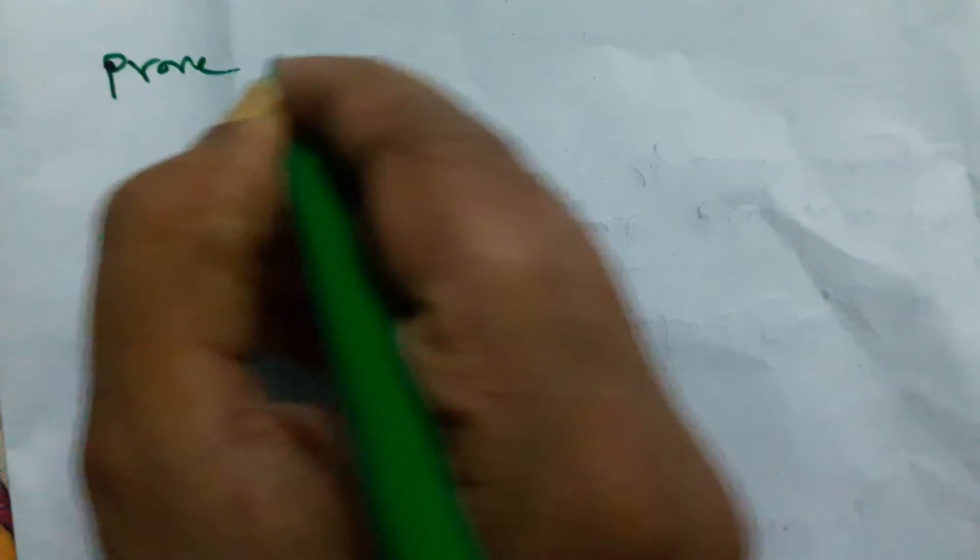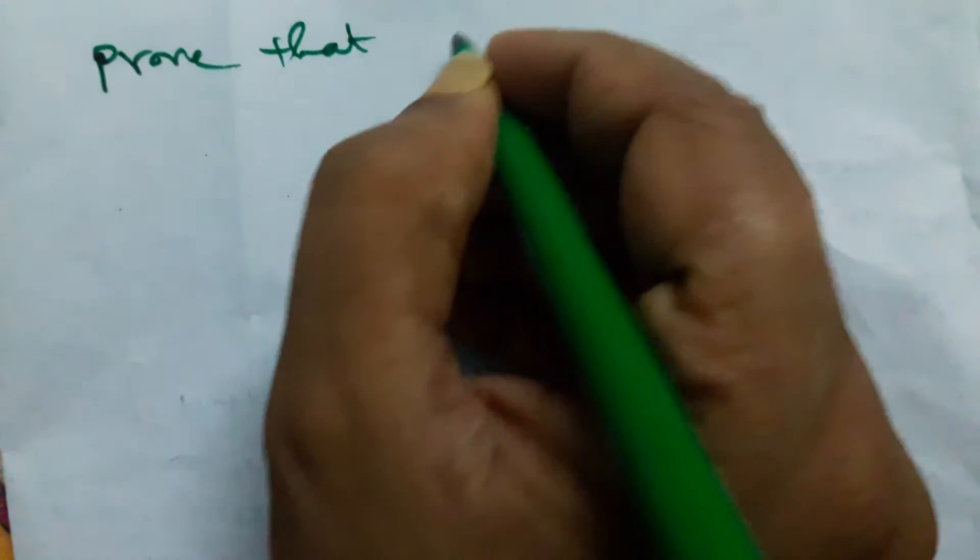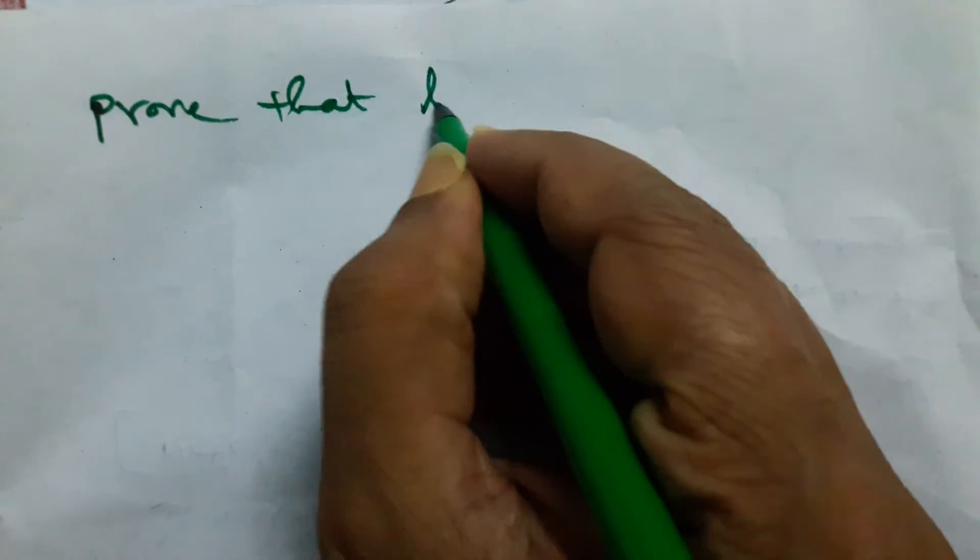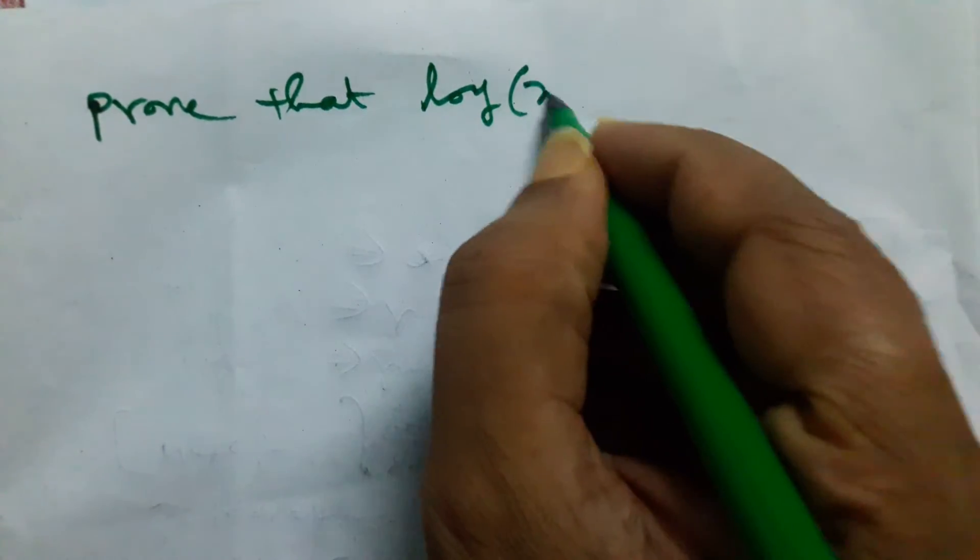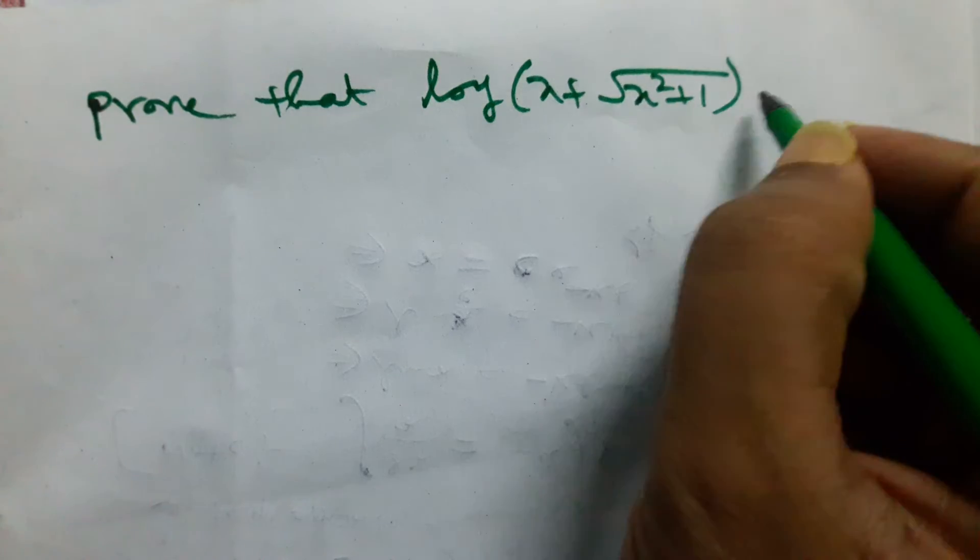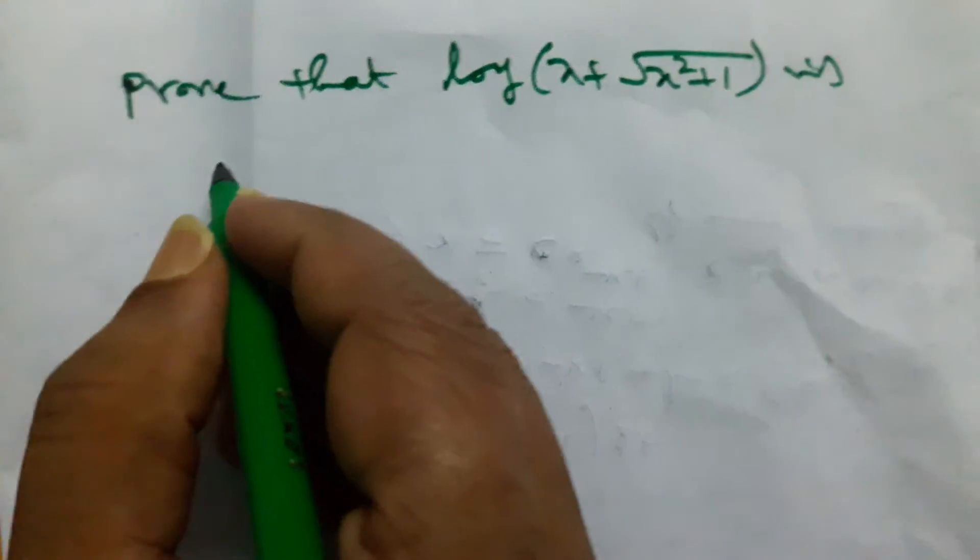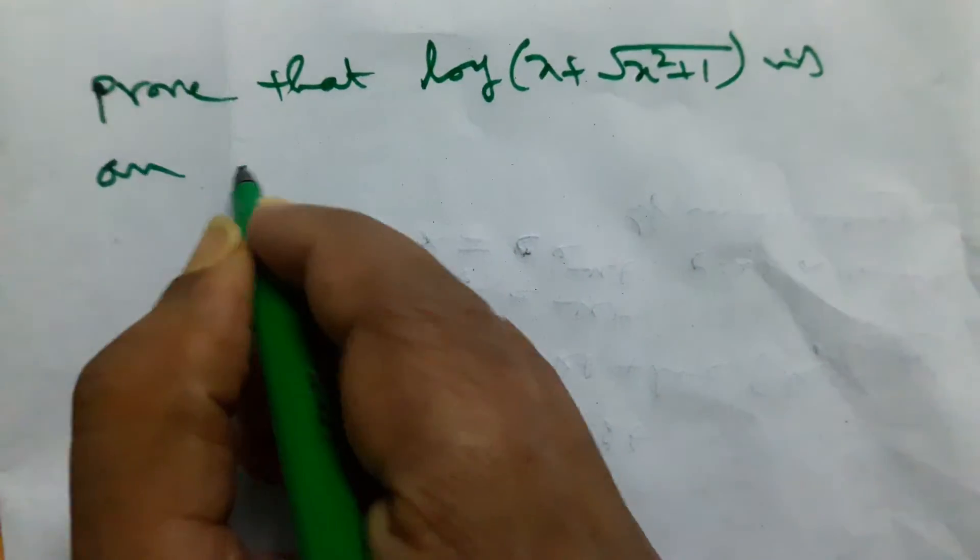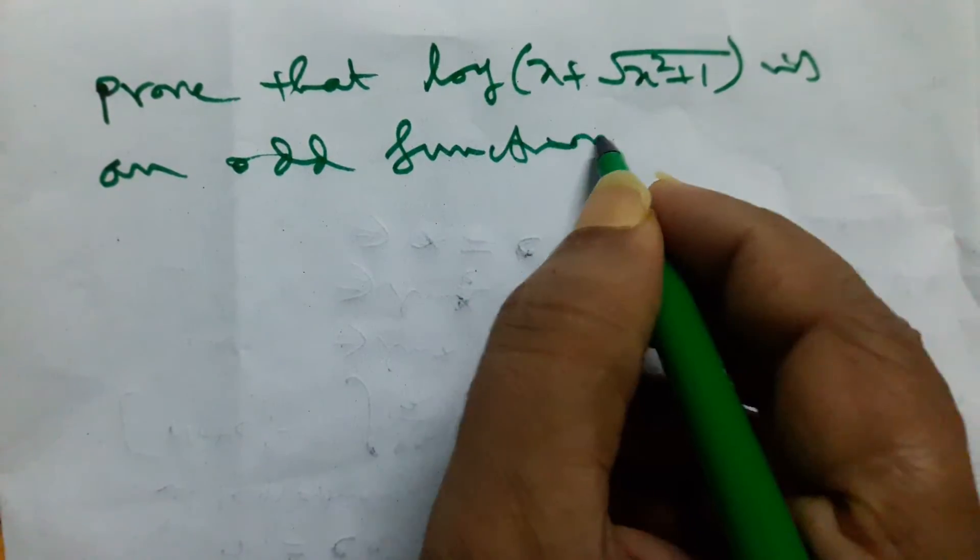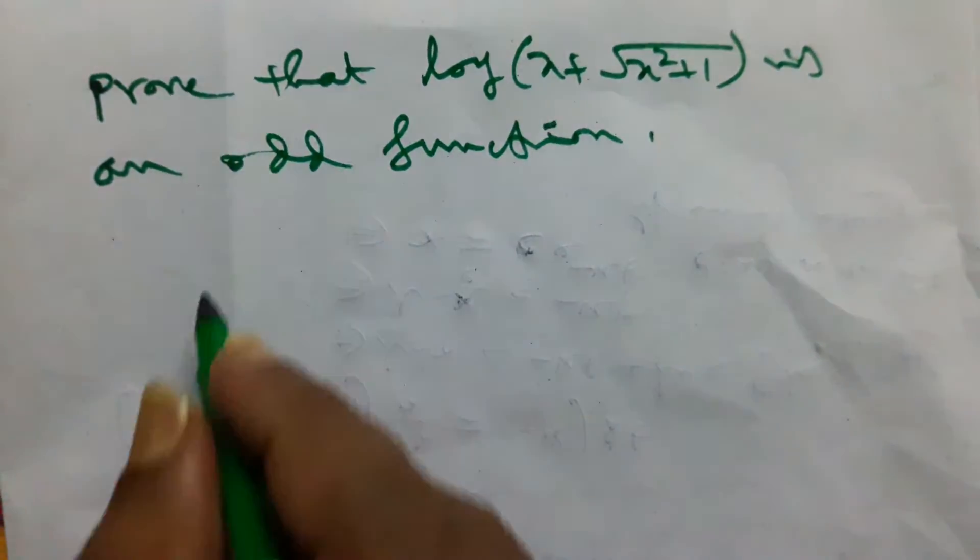Prove that logarithm of x plus x square plus 1 is an odd function. How to prove it?